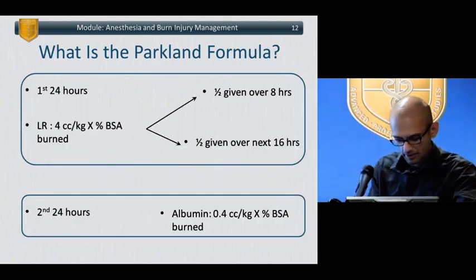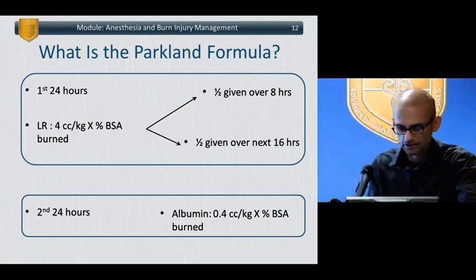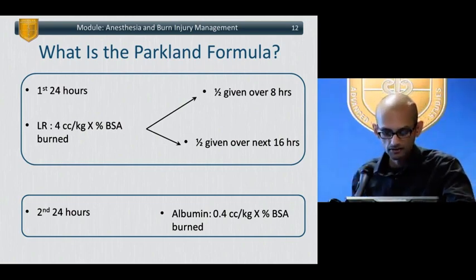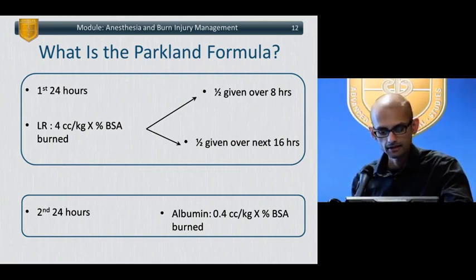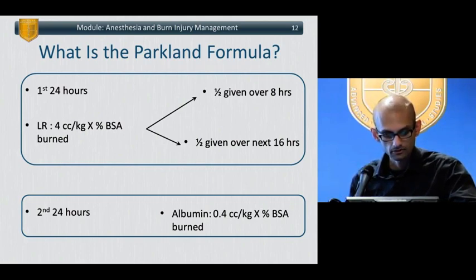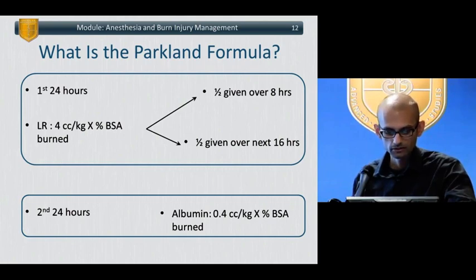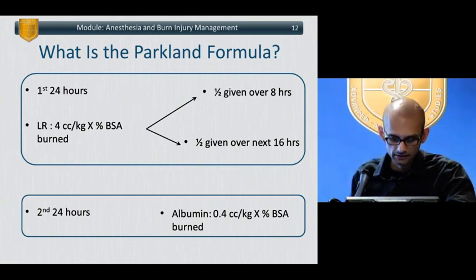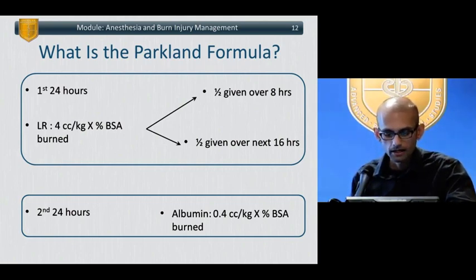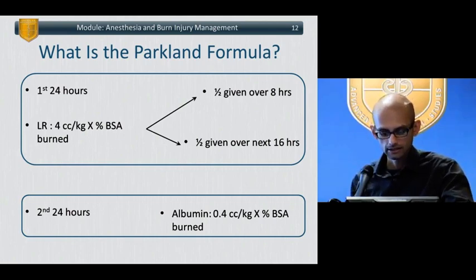The mainstay of management includes the Parkland formula, which addresses fluid repletion because there's so much surface area allowing for insensible fluid losses. That is comprised of lactated Ringer's in the first 24 hours: 4 cc's per kilo times the percent body surface area burned, half given in 8 hours and the other half in the next 16, followed by albumin at 0.4 cc's per kilo times the percent body surface area burned in the second 24 hours.